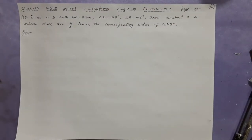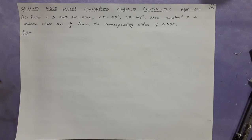The question is: draw a triangle with BC equal to 7 centimeters, one angle equal to 45 degrees, and another angle equal to 105 degrees. Then construct another triangle whose sides are four by three times the corresponding sides of triangle ABC.